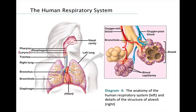From the pharynx, air is inhaled into the larynx, commonly known as the voice box. From the larynx, inhaled air passes towards the lungs through the trachea, or windpipe. Rings of cartilage reinforce the walls of the larynx and trachea, keeping this part of the airway open. The trachea then forks into two bronchi, one leading to each lung. Within the lung, the bronchus branches repeatedly into finer and finer tubes called the bronchioles.